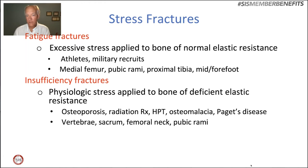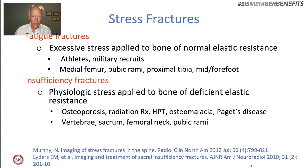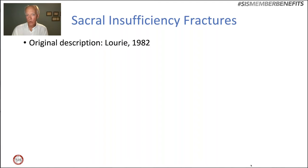Why might there be deficient elastic resistance? Osteoporosis — which we have here — radiation therapy, hyperparathyroidism, osteomalacia, Paget's disease. Insufficiency fractures occur in characteristic locations: the vertebra, so osteoporotic vertebral compression fractures fall in this category; in the sacrum, as we have here; the femoral neck; and the pubic rami. Sacral insufficiency fractures were first described by Laurie in 1982.